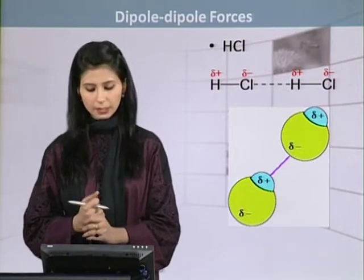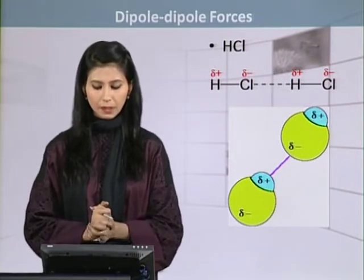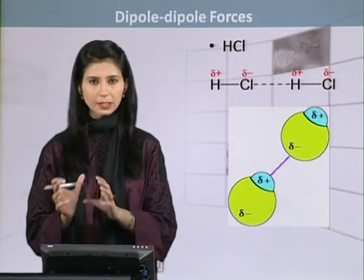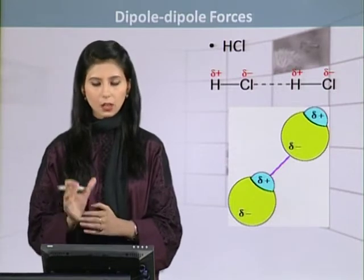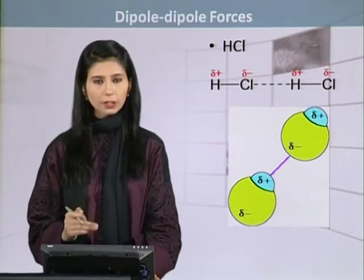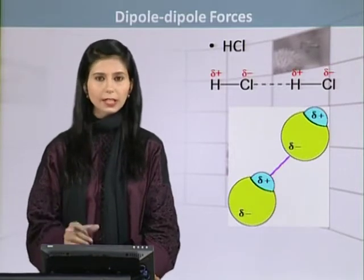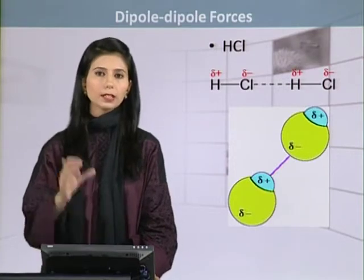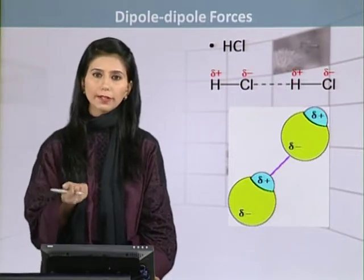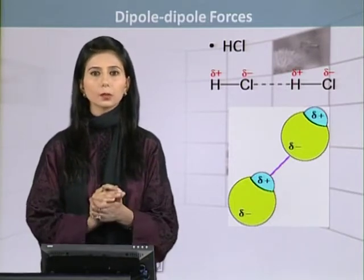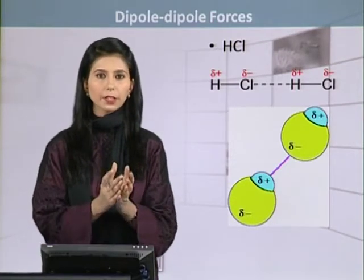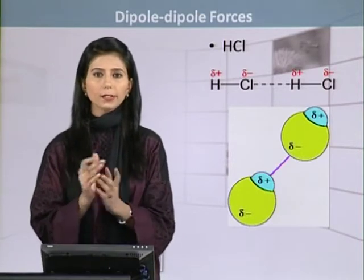In HCl, there is a chlorine atom and a hydrogen atom, both bonded to each other. But there is a slight difference in the electronegativity of these atoms. Hydrogen's electronegativity is 2.2 and chlorine's is 3. Electronegativity is the tendency of an atom to attract the shared pair of electrons when there is a covalent bond — there is a mutual sharing of electrons.